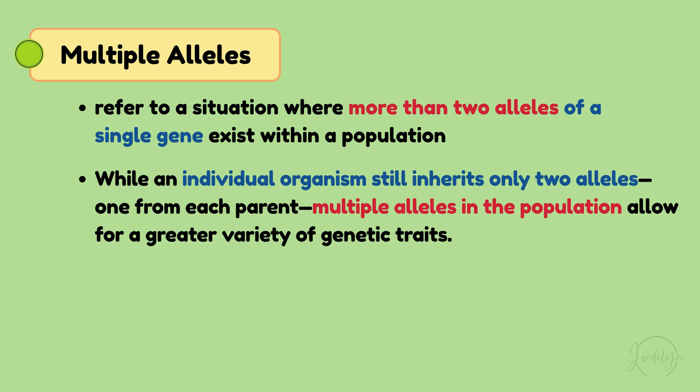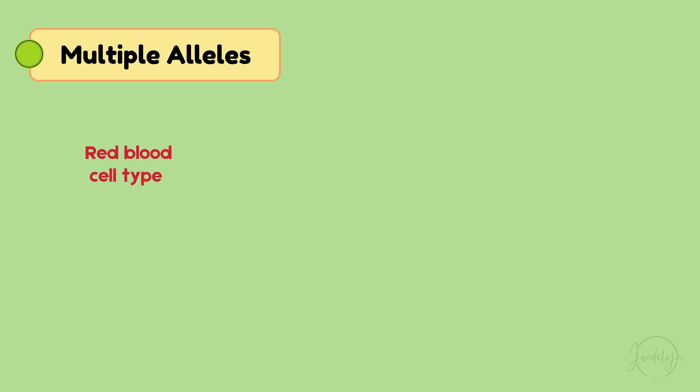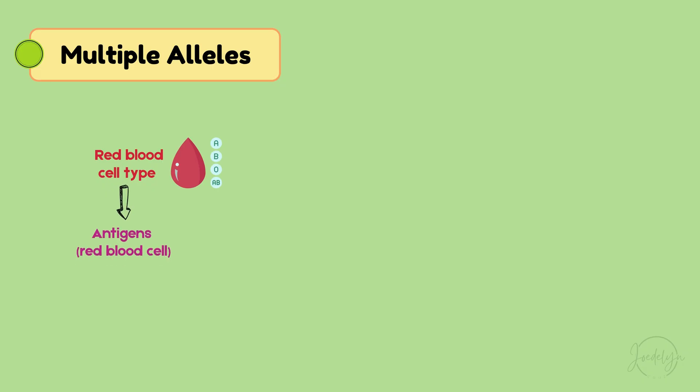A classic example of this is the ABO blood type system in humans. Your blood type — A, B, AB, or O — is determined by antigens on your red blood cells.